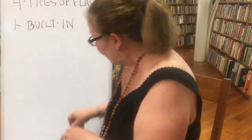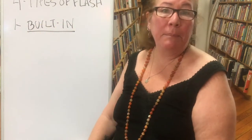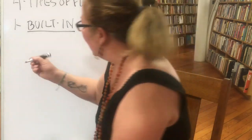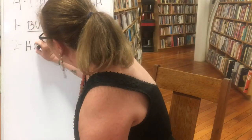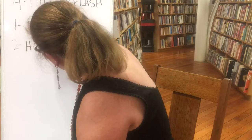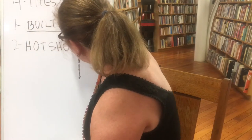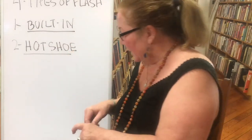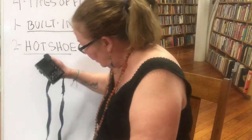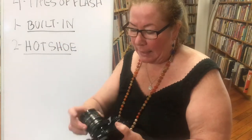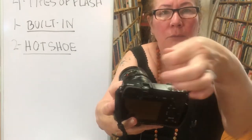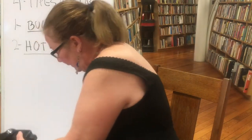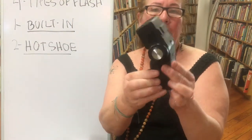Built-in is the most common type of flash you'll find on a camera. The second type that's really common is called a hot shoe. A hot shoe flash is common on single-lens reflex cameras. I'm going to show you this part on my camera — this part right here is the boot, the shoe, and this is what a hot shoe flash looks like.